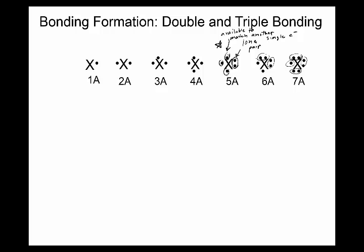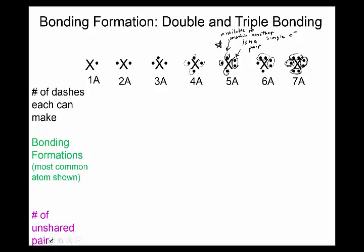The lone pairs have important significance for chemical reactivity but don't make covalent bonds — with octet exceptions they can, but for the most part halogens make one dash. The single dots correspond to how many dashes that column can make. Column 1a will make one dash with no unshared pairs. 2a has two dashes, though you'll rarely see 2a make covalent bonds. 3a can make three dashes.